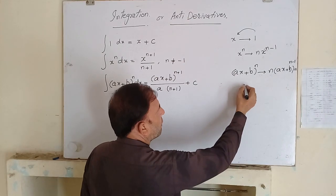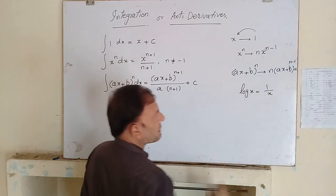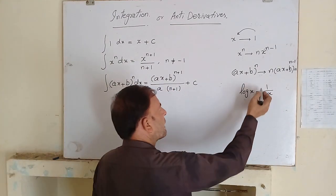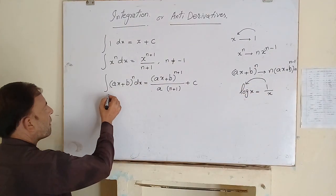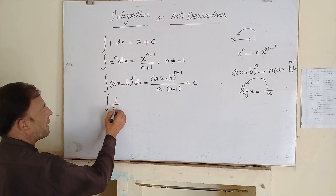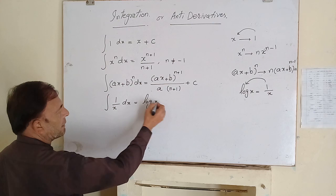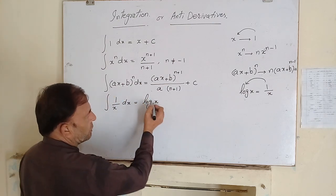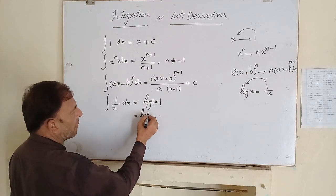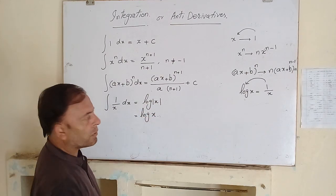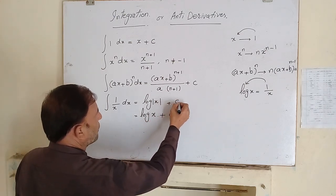We have the derivative of log x, which is 1 over x. It means the integration of 1 over x will be log x. The integration of 1 over x dx is equal to log of x. We usually write log x, and if we write only log x it is also true. Plus the constant of integration is used in both cases.